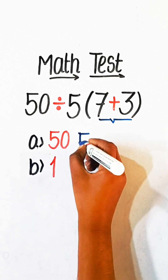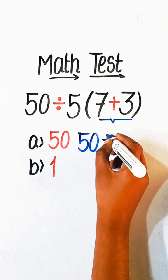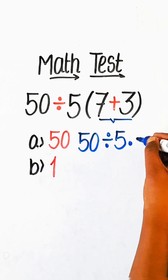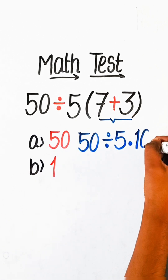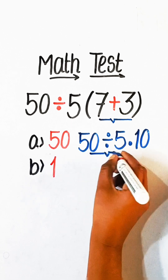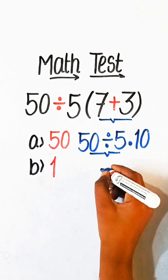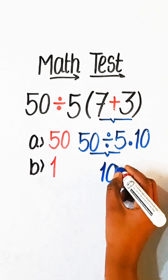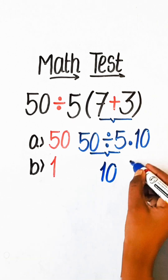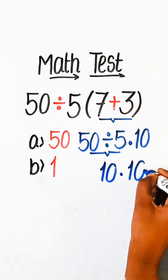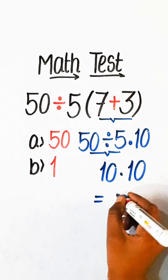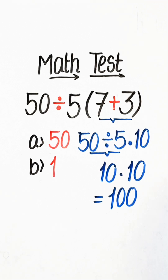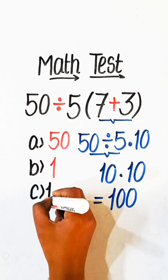We write here: 50 divided by 5 multiply by — 7 plus 3 is 10. So 50 divided by 5 is 10, multiply by 10 equals 100. So the answer is option C: 100.